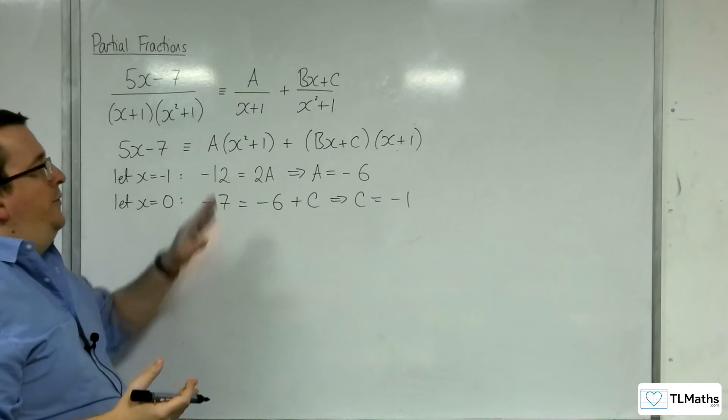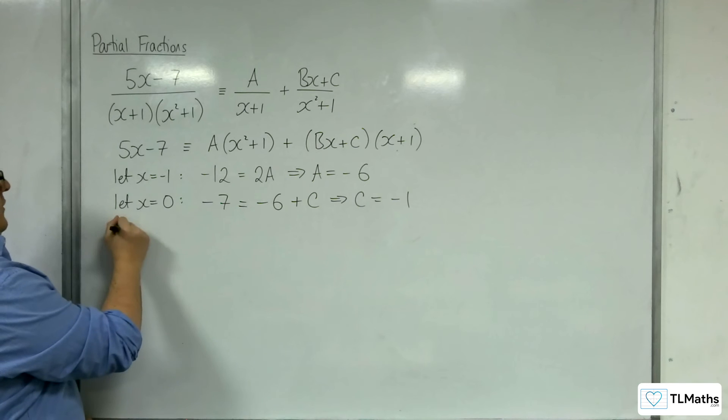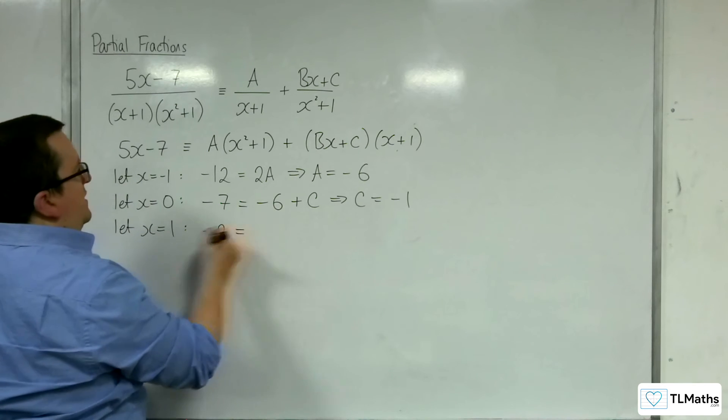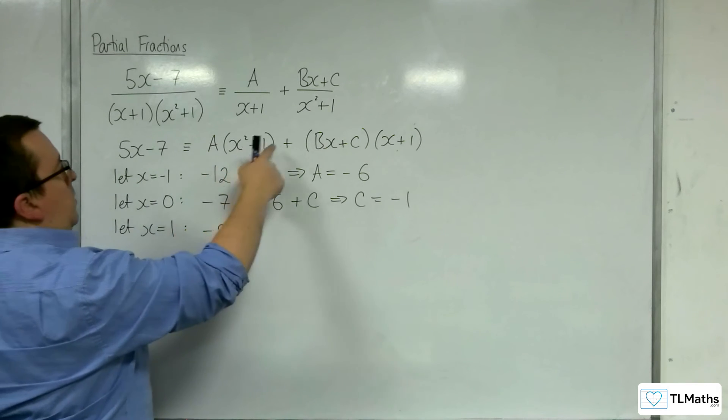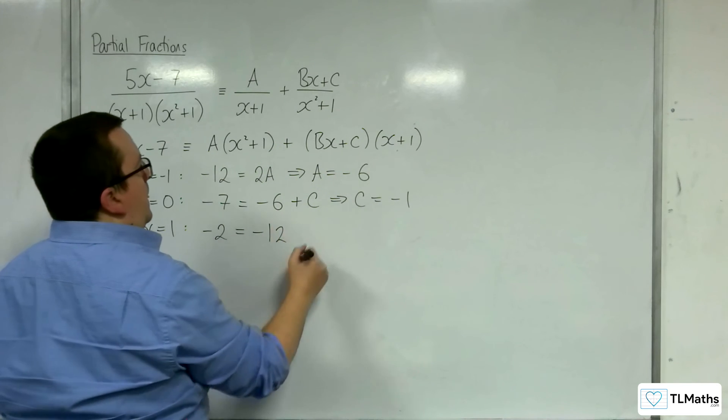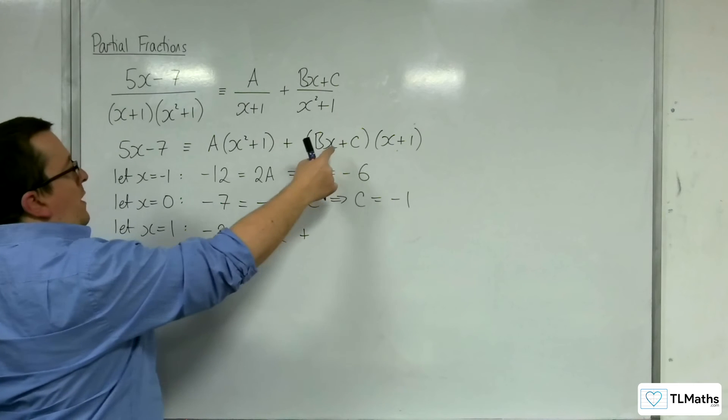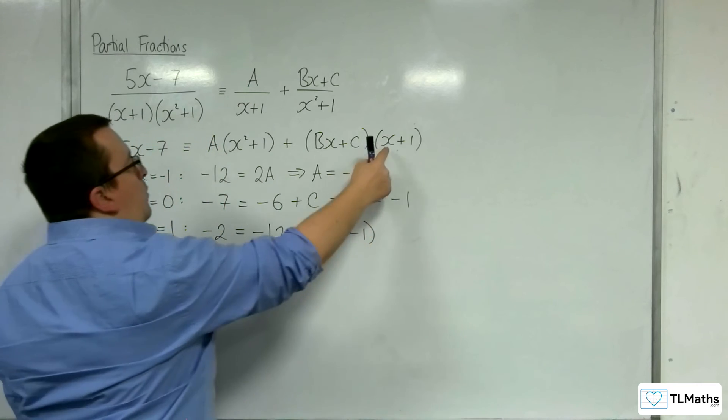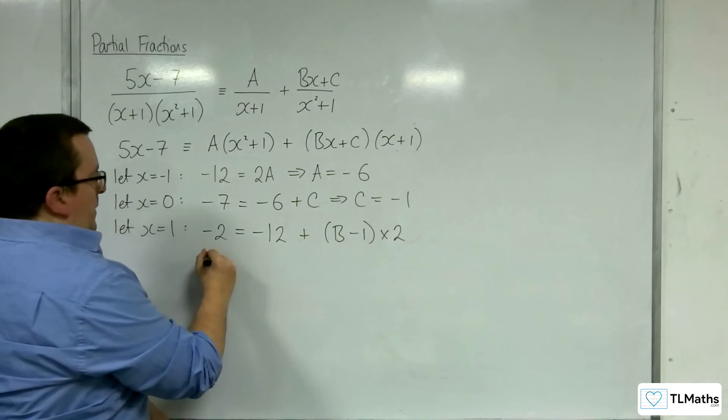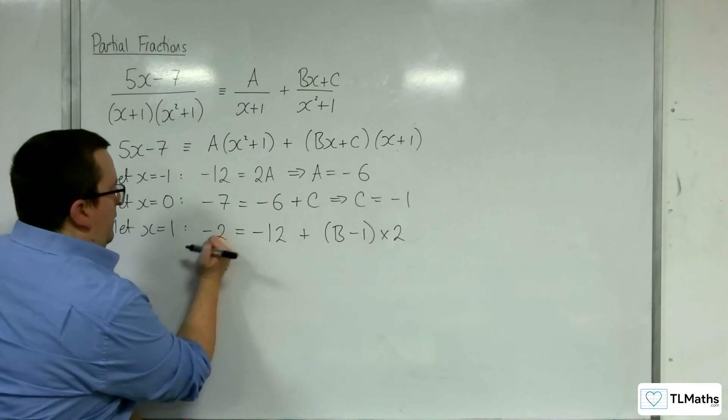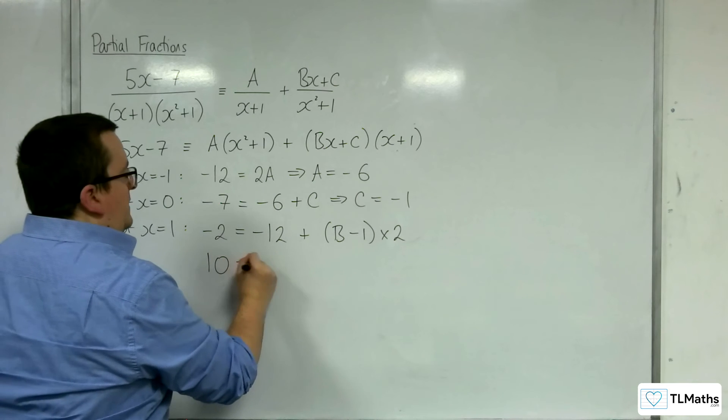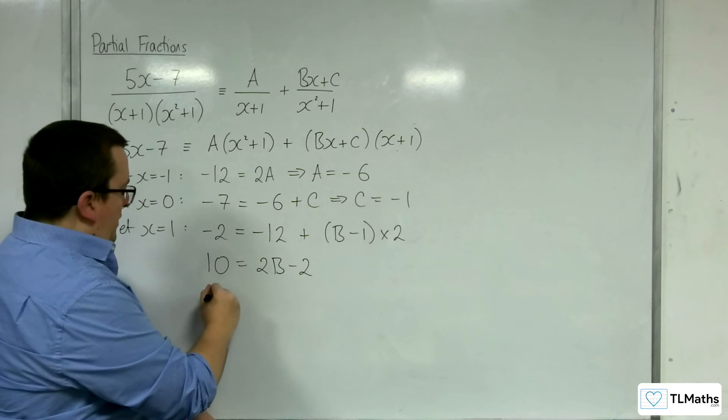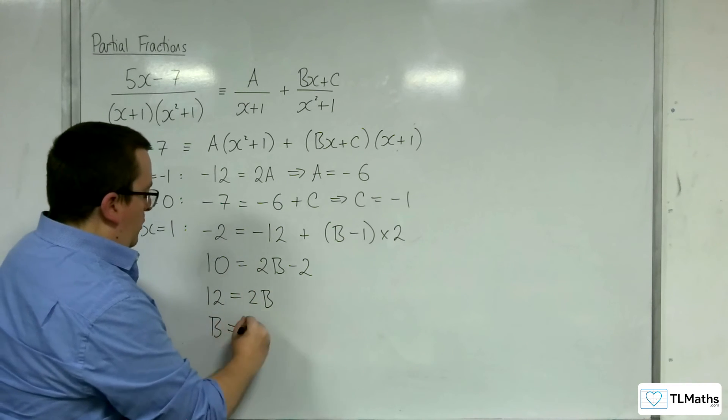Right, there's no other obvious choices to knock out terms. So let's choose x equals 1 next. So we get 5 take away 7, which is minus 2 on the left-hand side. We've got 1 plus 1, so 2 lots of A, so minus 12, plus B times 1 take away 1. So we'll have B take away 1 times by 1 plus 1, which is 2. So we have minus 2. Well, I could add 12 to both sides. So 10 is equal to 2B take away 2. Add the 2 to both sides, we get 12. So B has got to be equal to 6.